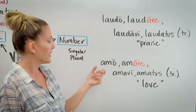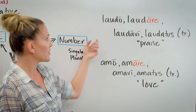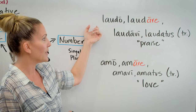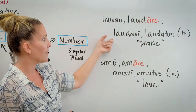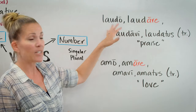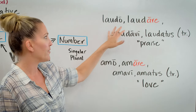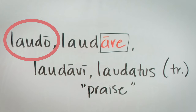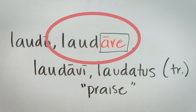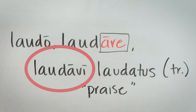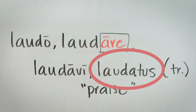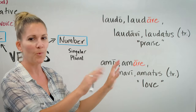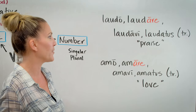This verb here means praise, this one means love. For laudo, laudare, laudavi, laudatus — those four forms translate as: I praise / I am praising / I do praise; to praise; I praised; and praised — which is a participle we'll look at much further down the road. Depending on your curriculum, you may also see a word in parentheses, 'tr' or 'intr', meaning transitive or intransitive.